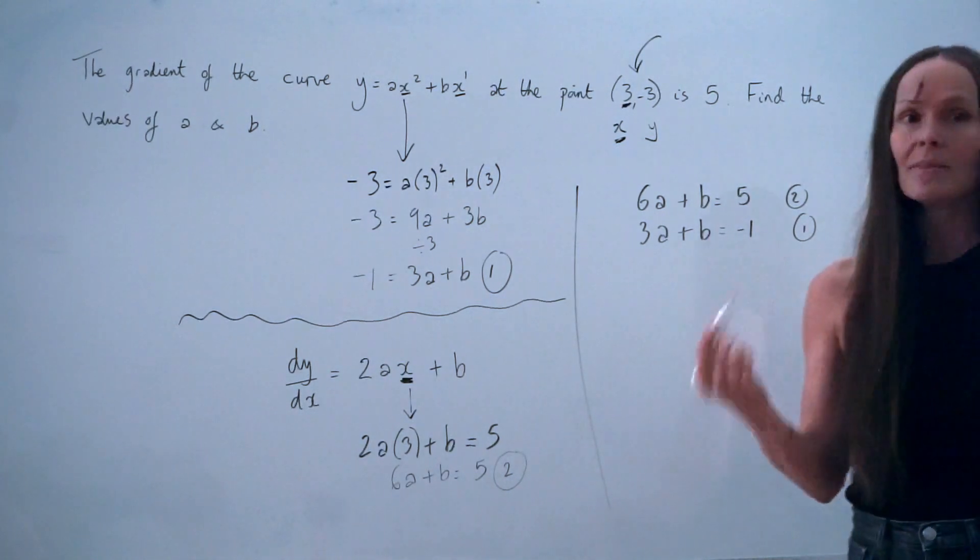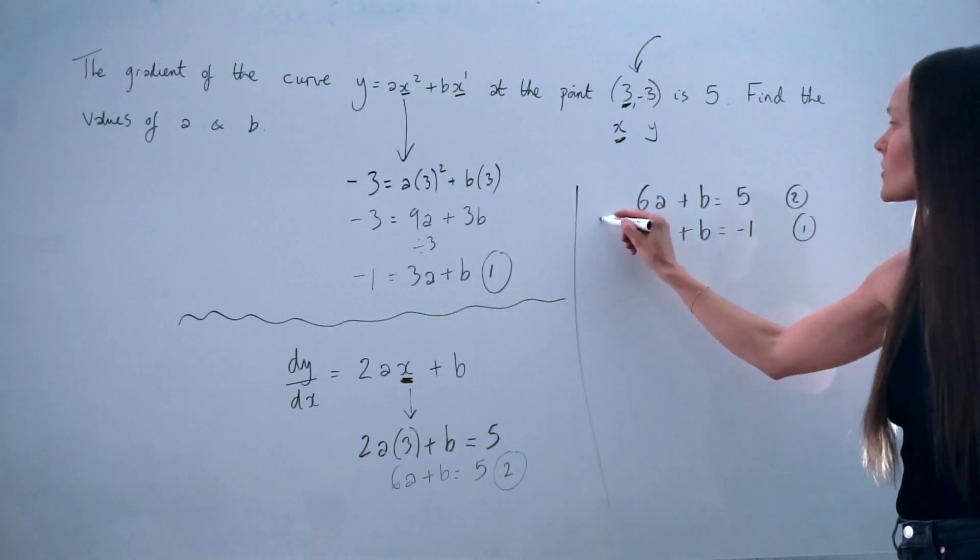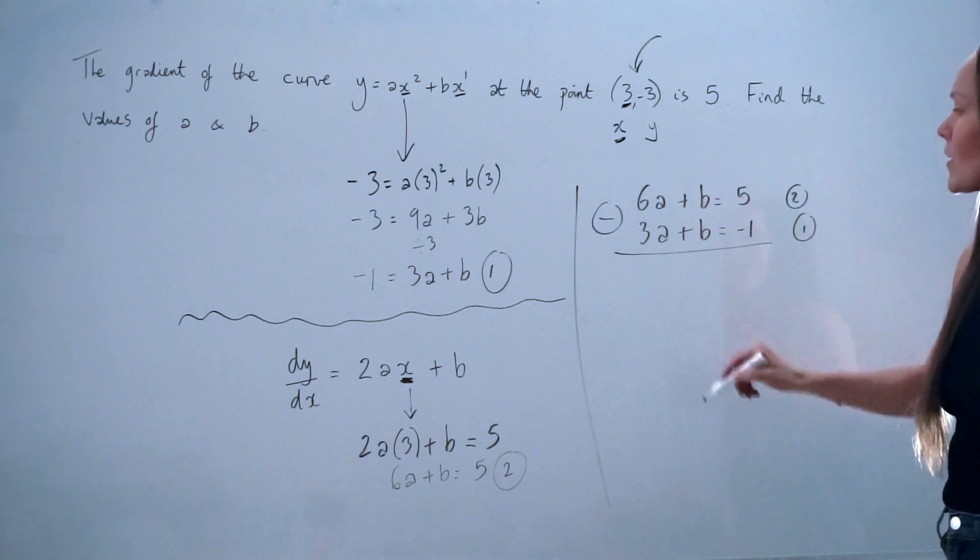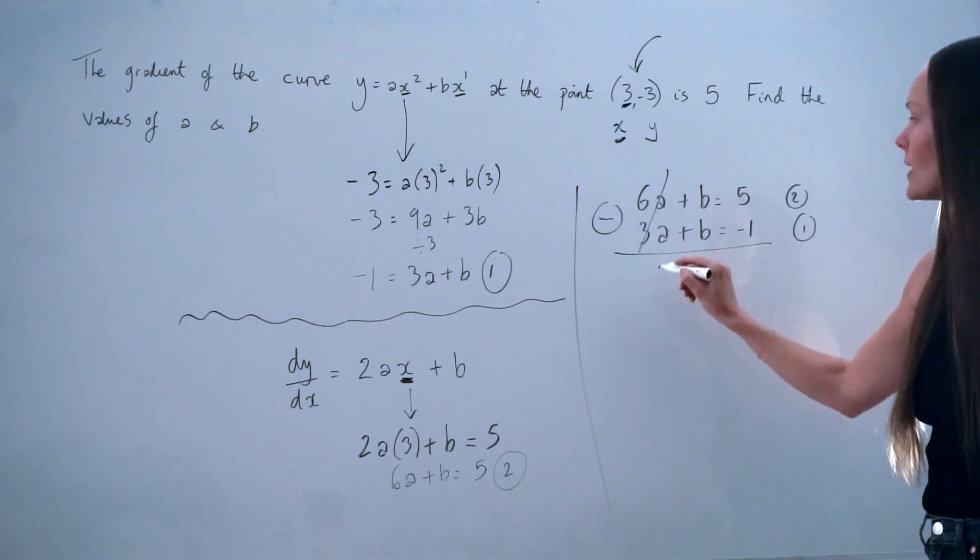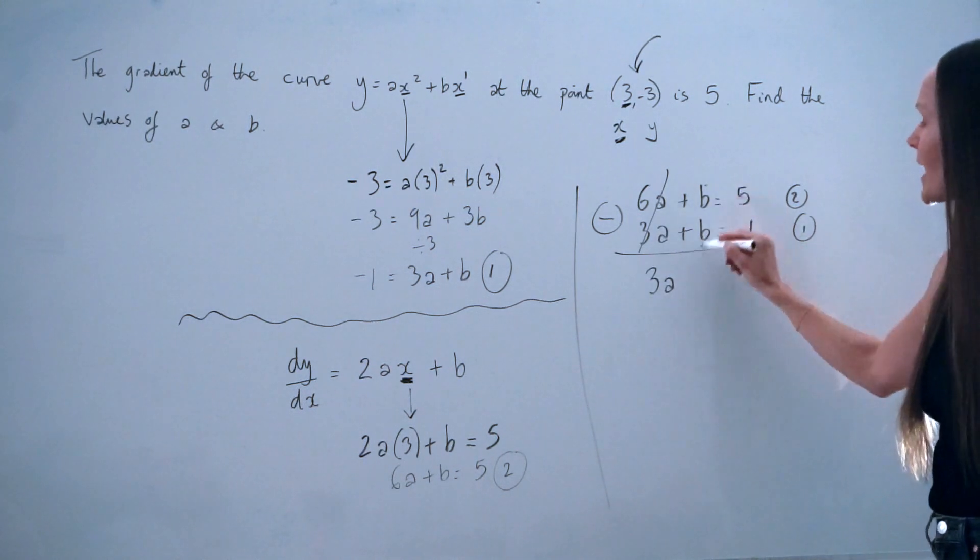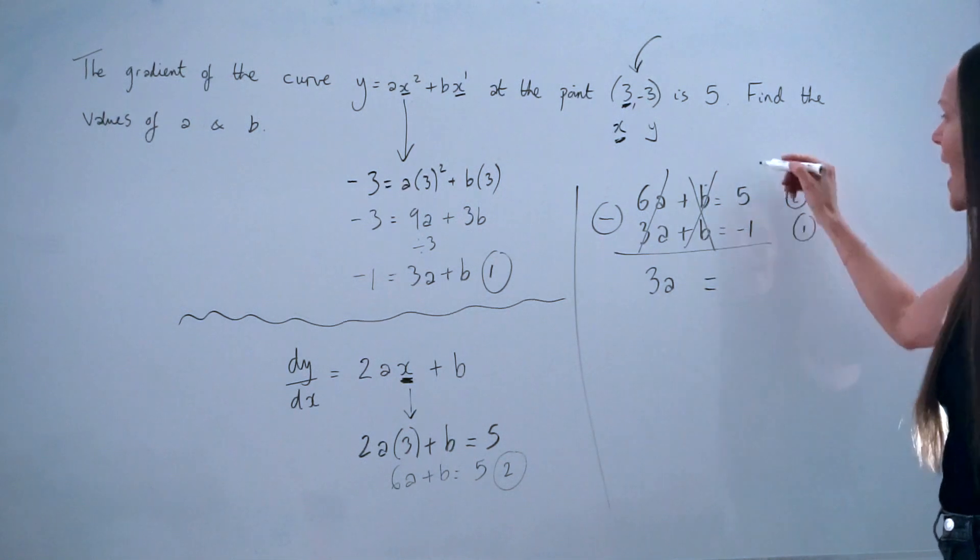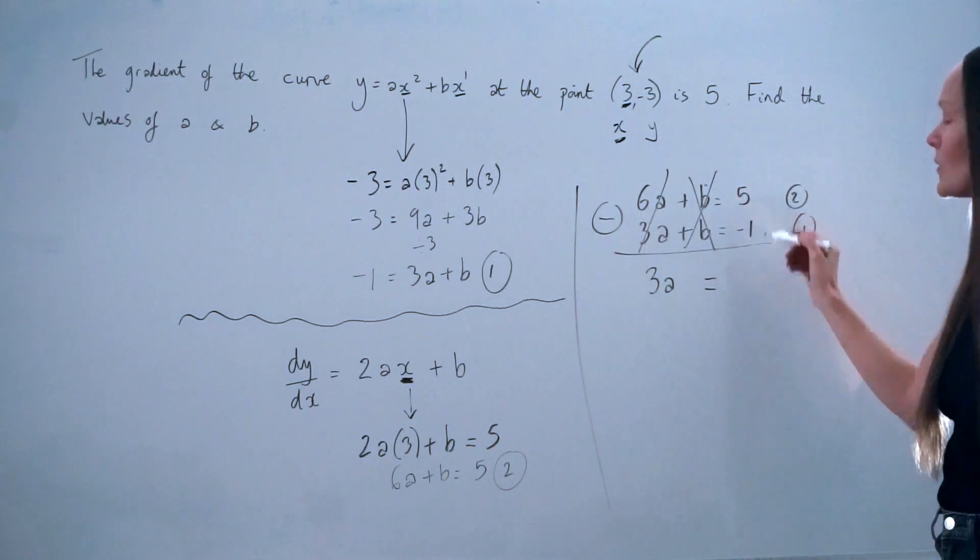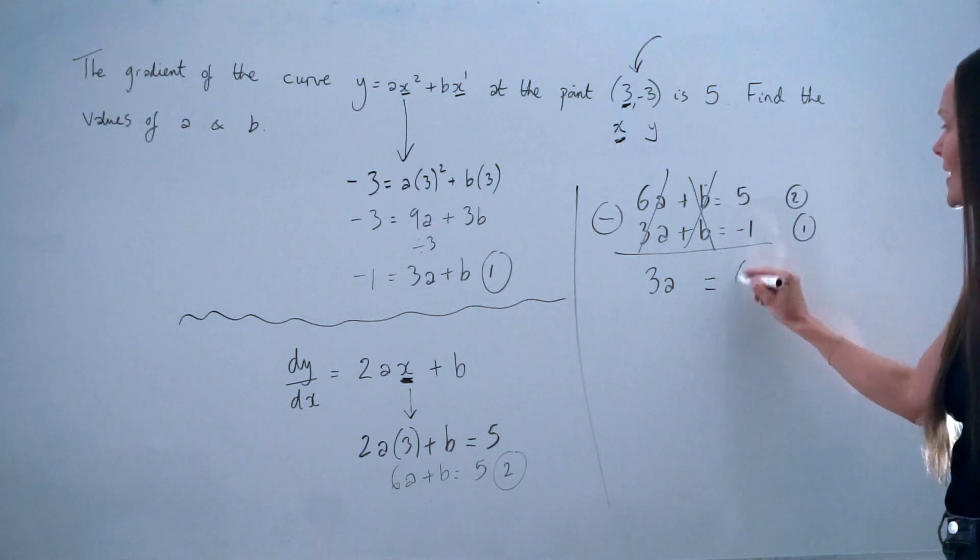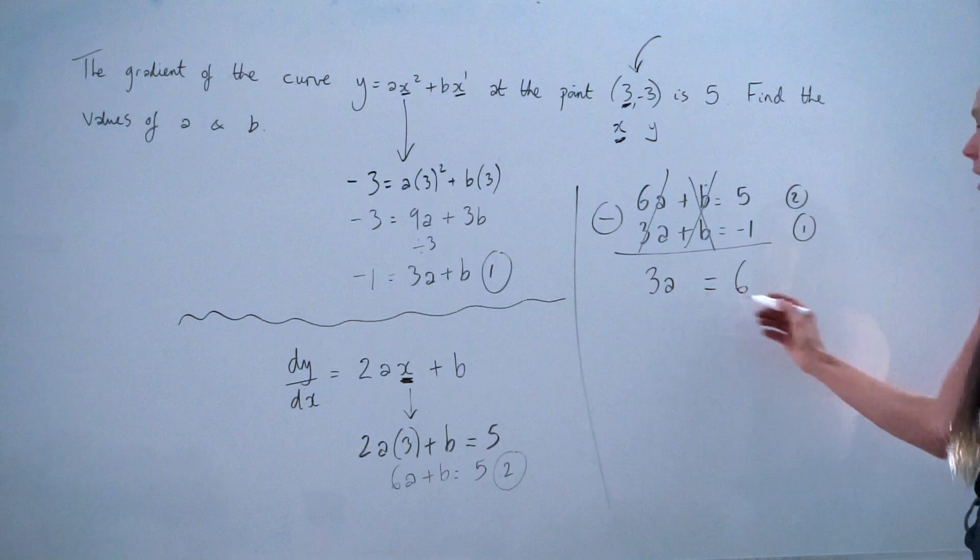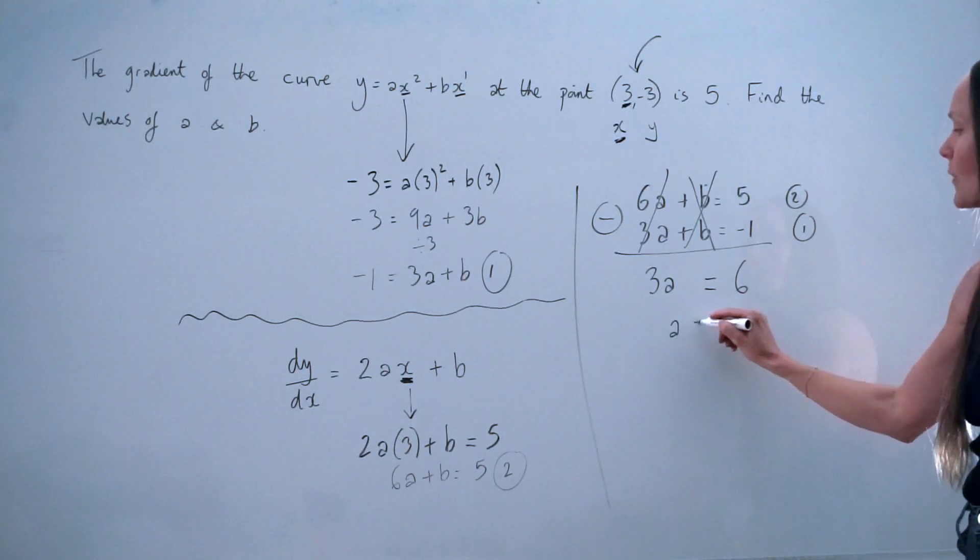And I'm going to use the elimination method, and I'm going to subtract these two equations. So 6a take away 3a is 3a. b take away b is 0, so I've eliminated the b's. And 5 take away negative 1 is the same as 5 plus 1, which is 6. And now I can solve this equation to find a. If I divide by 3 on both sides, I find that a is equal to 2.